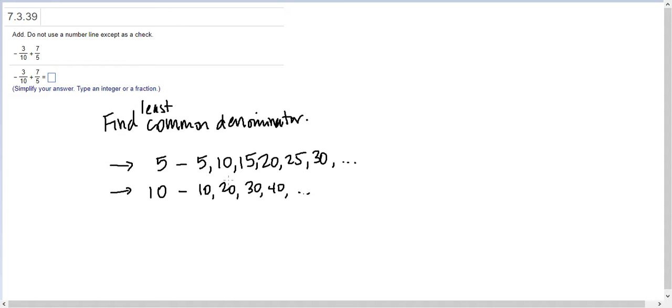For these two lists we're looking for the smallest number that is common, and you can see pretty quickly that number is 10. It's the second number on the list of 5's and it's the first number on the list of 10's.